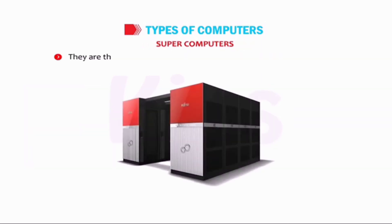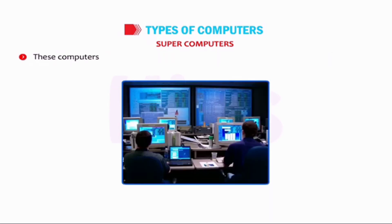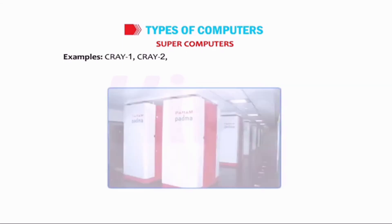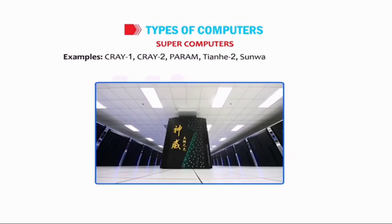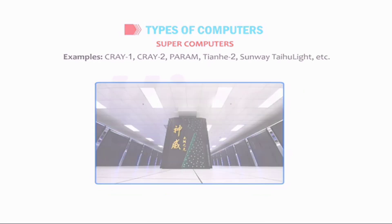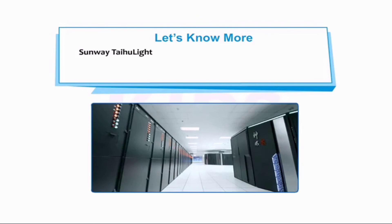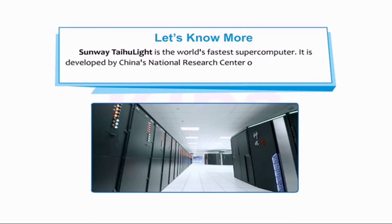Supercomputers: they are the most powerful computers with a huge processing speed. These computers are used for weather forecasting, space research, satellite control, etc. Examples include Cray-1, Cray-2, Param, Tianhe-2, Sunway Taihu-Lite, etc. Sunway Taihu-Lite is the world's fastest supercomputer. It is developed by China's National Research Center of Parallel Computer Engineering and Technology, NRCPC.